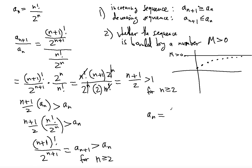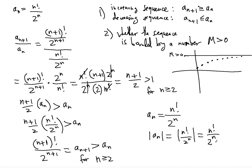The sequence is given by n!/2^n. We need to look at the absolute value of a_n and see whether it can be less than some number m. Since n is always positive and 2^n is always positive, the absolute value is simply n!/2^n — the original sequence itself.